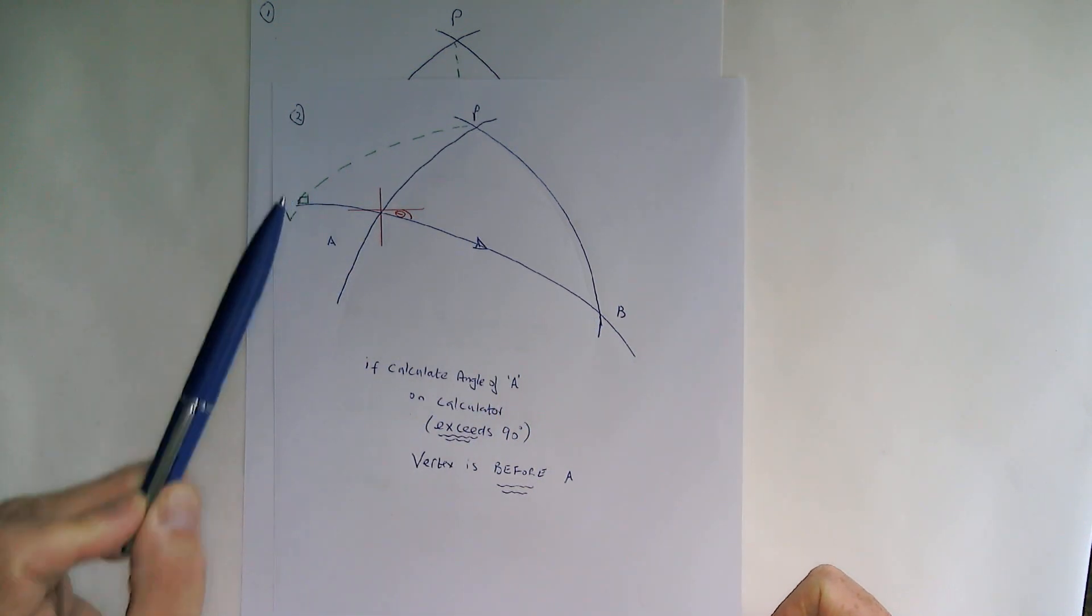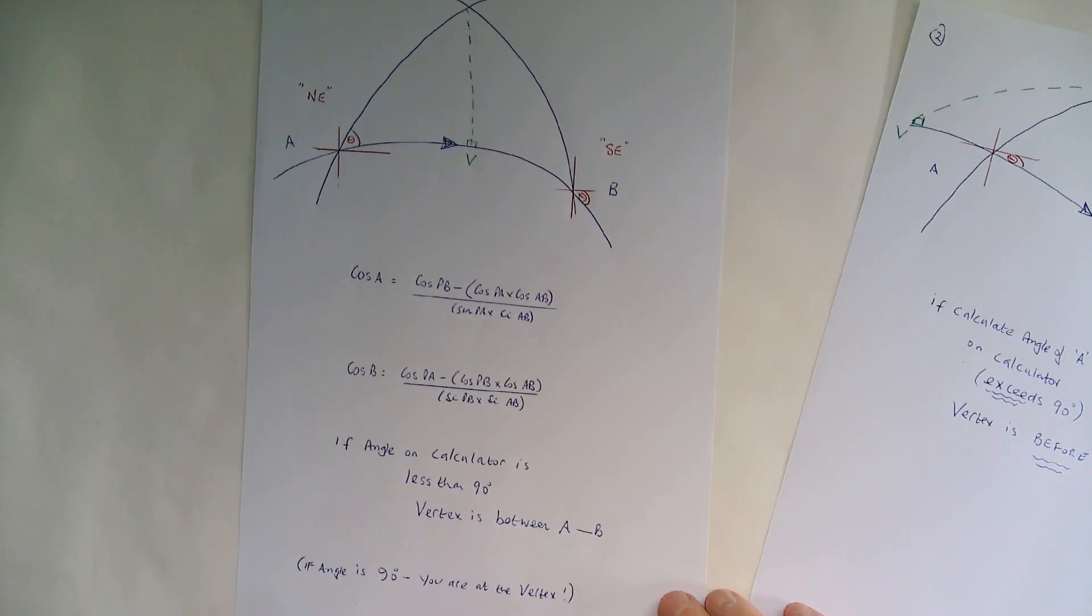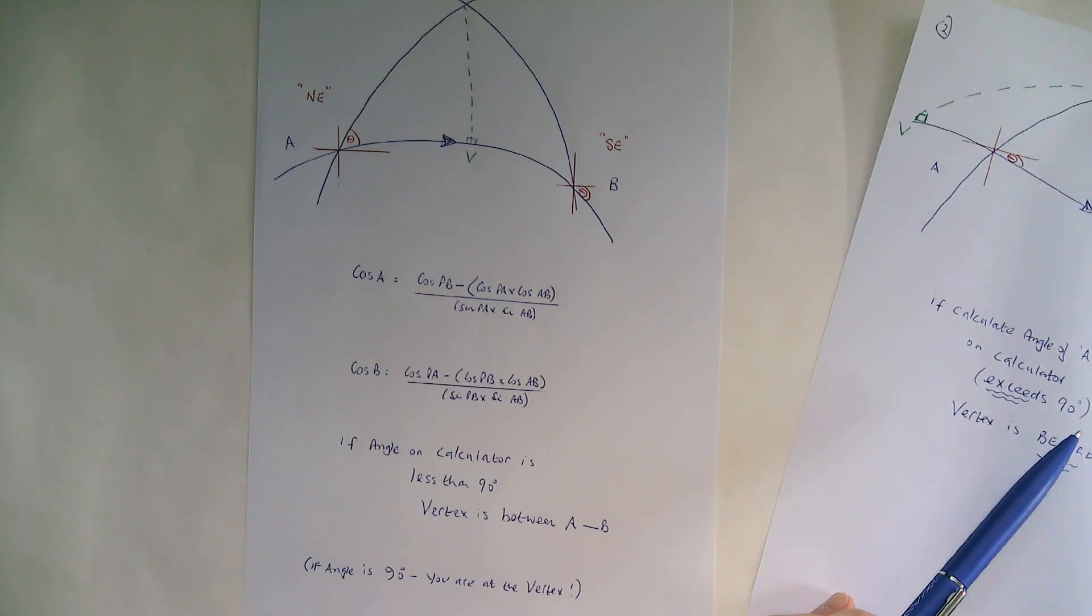And of course, just to mention, if the angle you actually get is exactly 90 degrees, you are actually at the vertex.